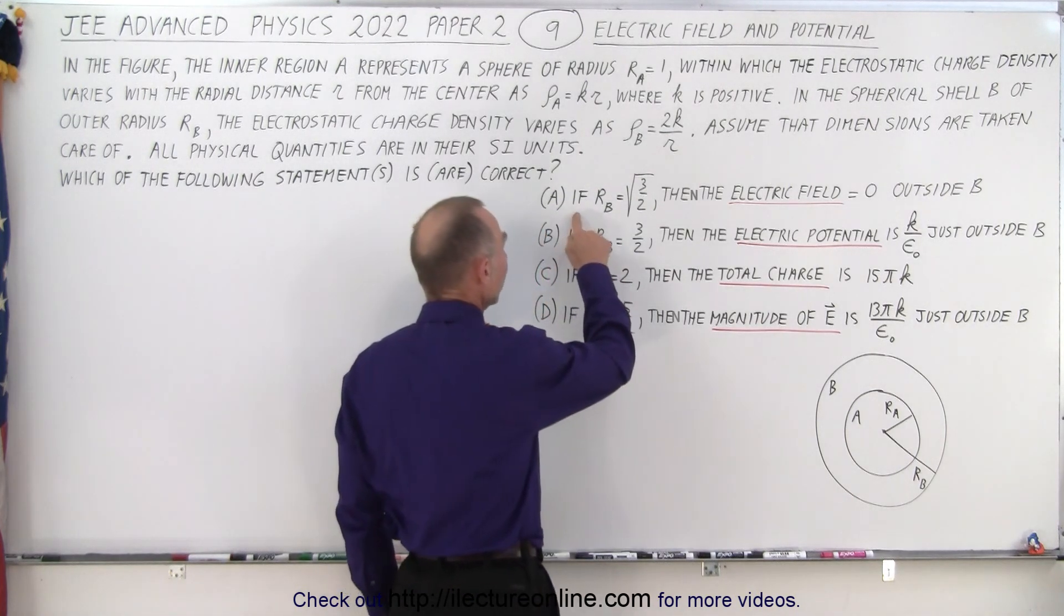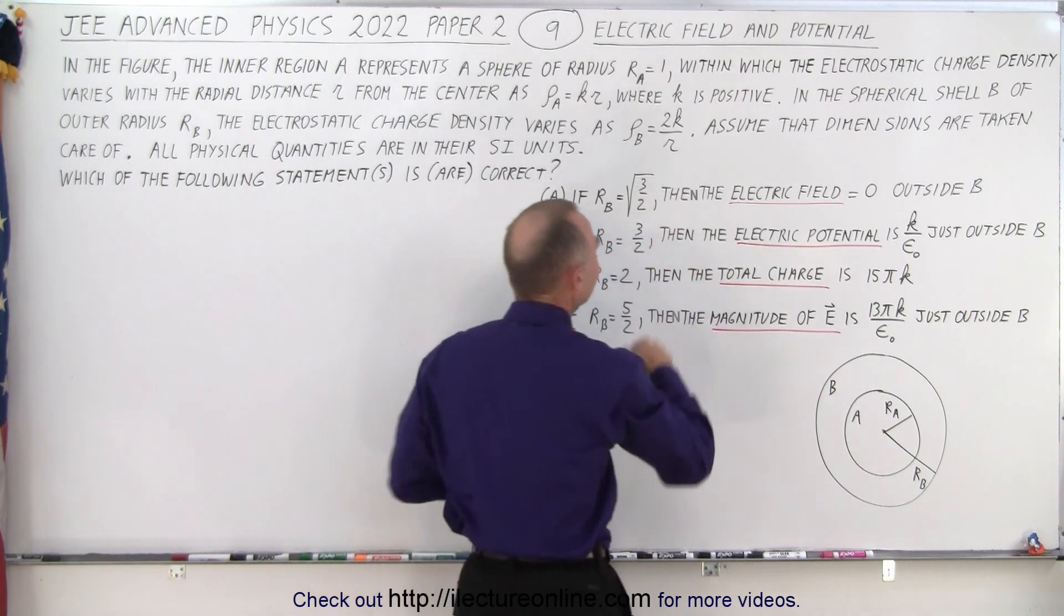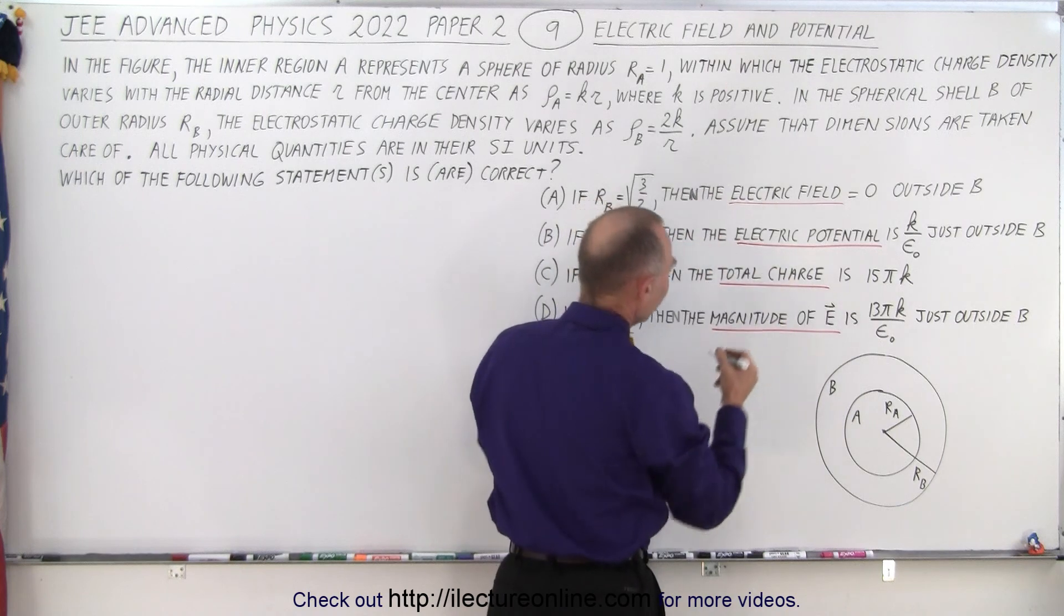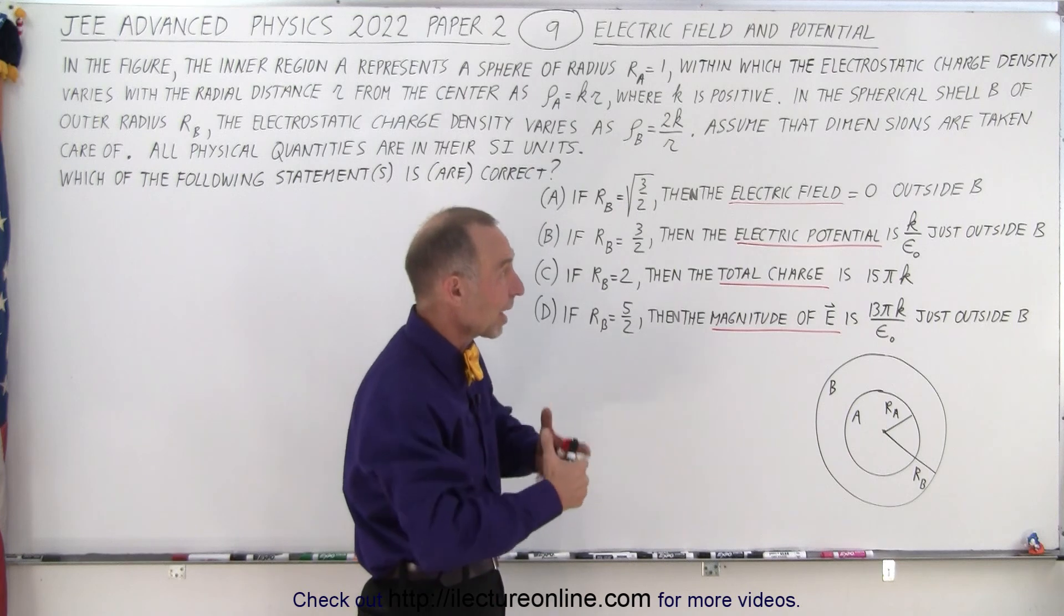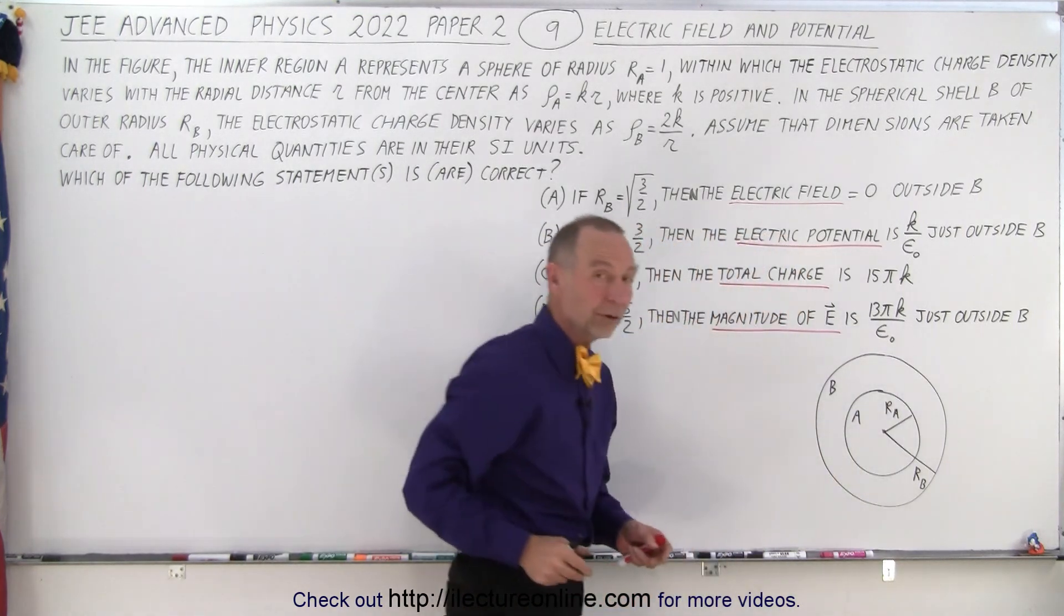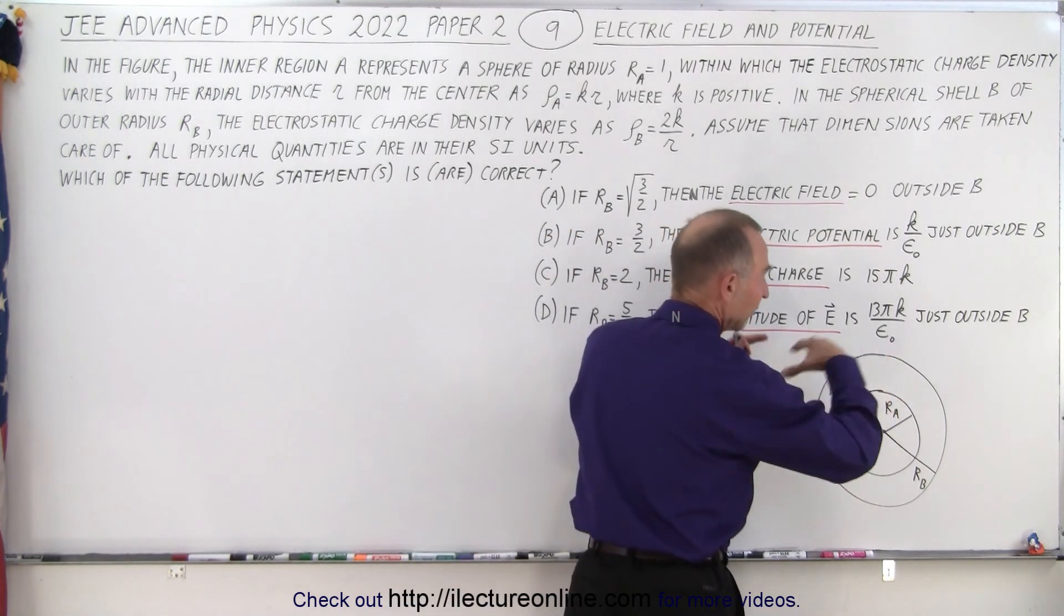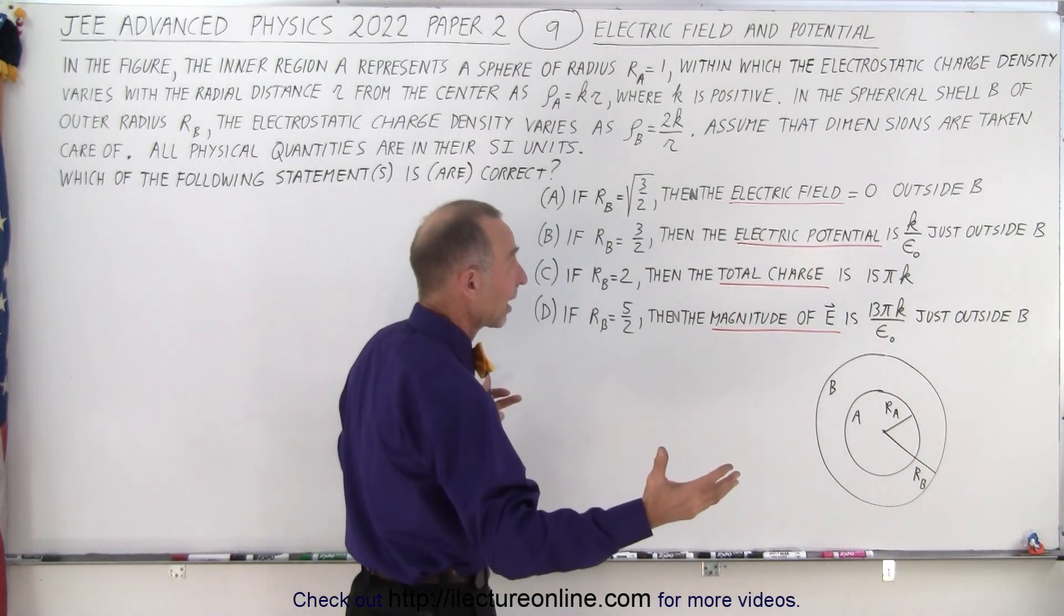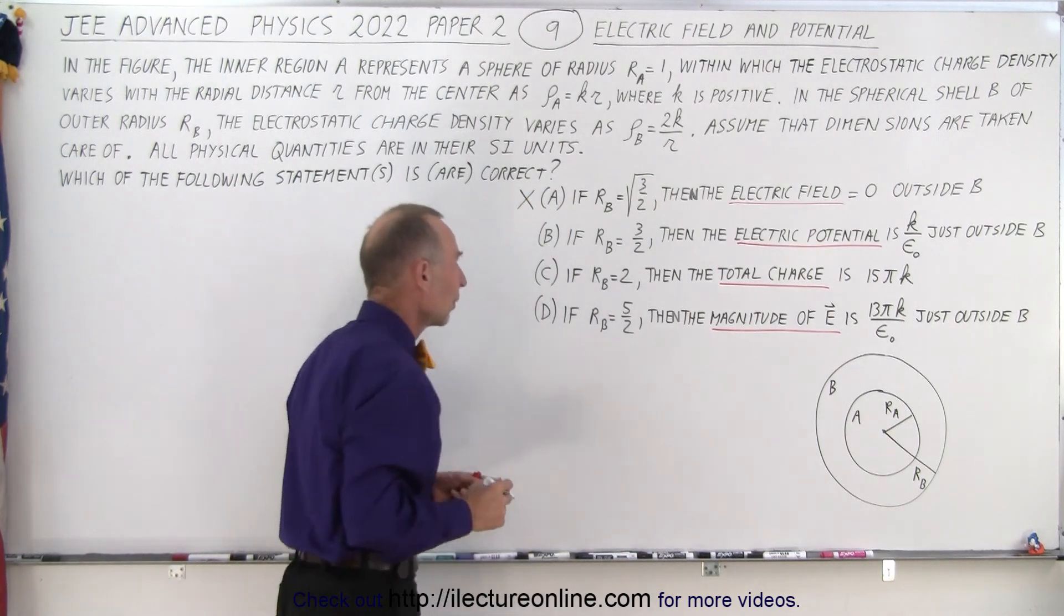Based on the density of what's in the spherical shell B, it also looks like it's positive charge. So when I look at answer A, it says if R sub B equals the square root of 3 over 2, then the electric field equals zero outside B. Obviously there can only be a zero electric field outside B if the total charge adds up to zero. But since the charge in A is positive and the charge in B is positive, the total charge can never be zero. So therefore the electric field outside B cannot be zero. So right away you can say that A is not correct.